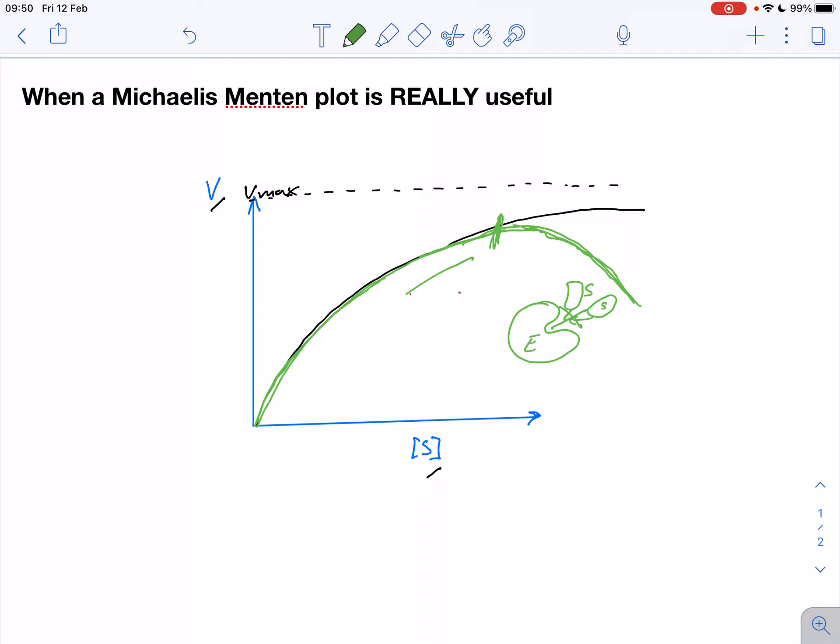Now this case is actually called substrate inhibition. And it is not uncommon for enzymes to show a behavior like that, that they get inhibited when the substrate concentration is very high. So we have substrate inhibition in this case. And this is what the Michaelis-Menten plot really shows very nicely, that we find that the rate at very high substrate concentration goes down.